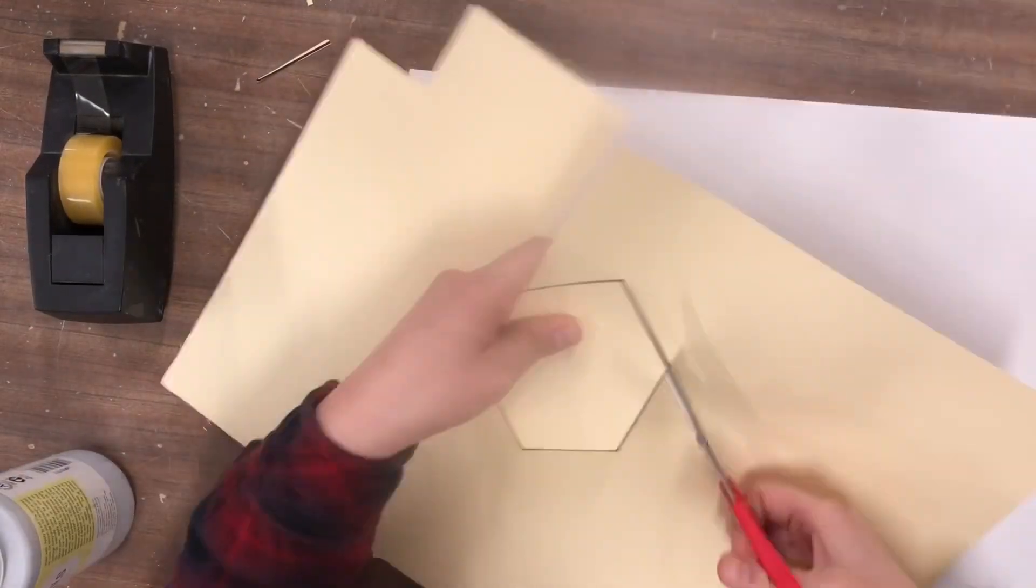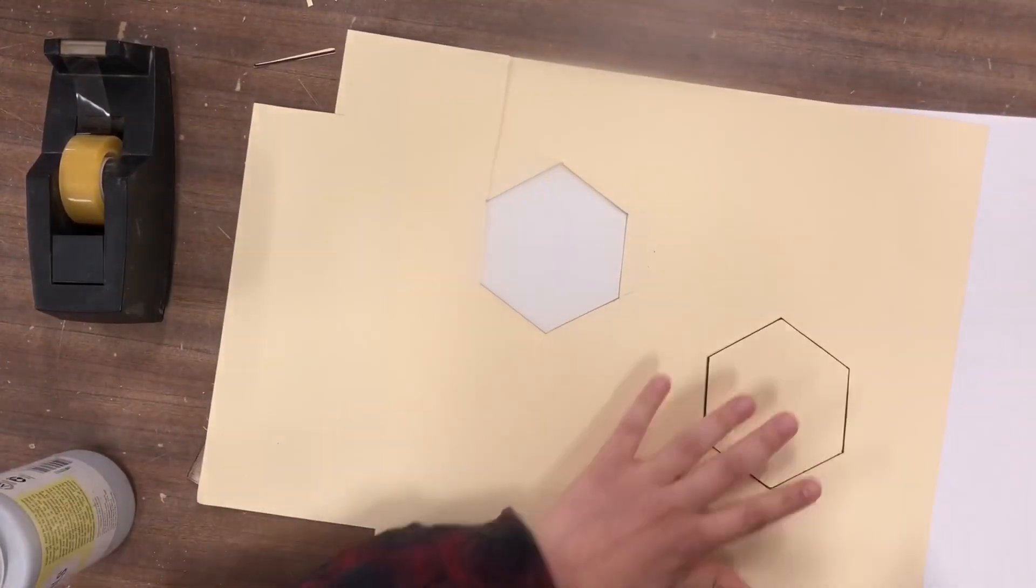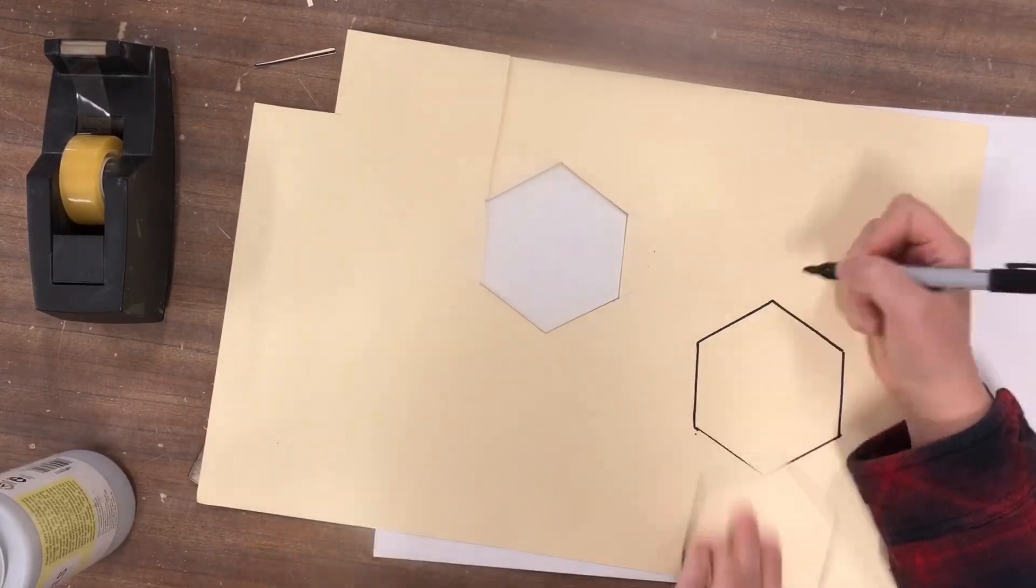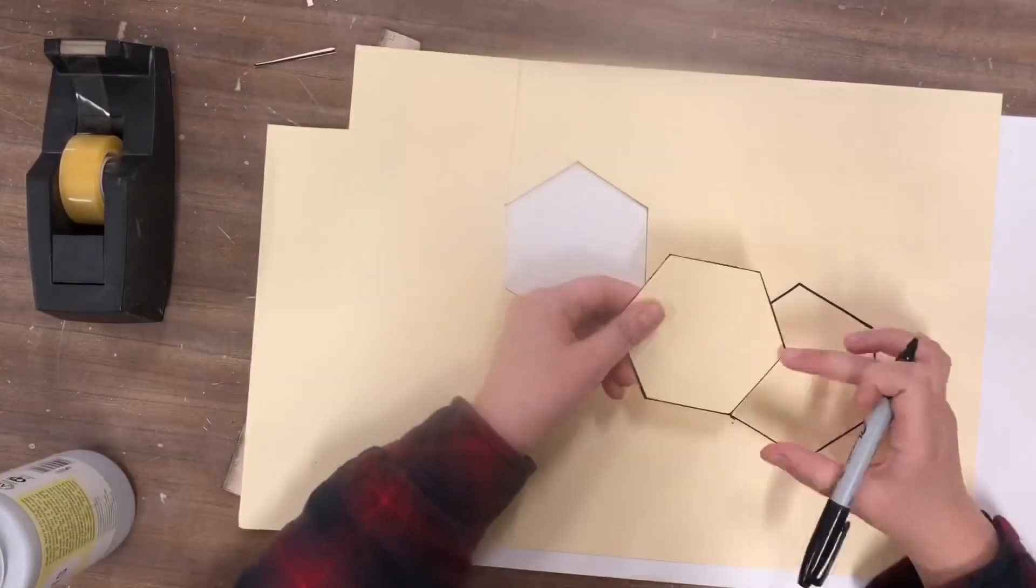Since you'll need two identical hexagons for your prism, cut out the first one and trace it alongside an empty spot on your paper, making sure you leave a little bit of room for the additional pieces.